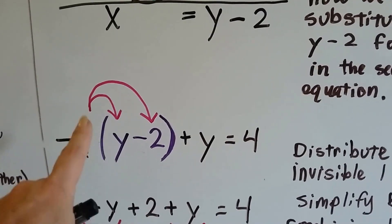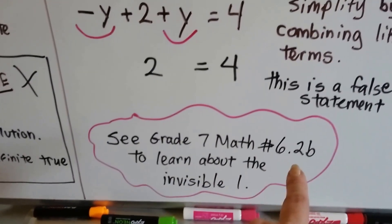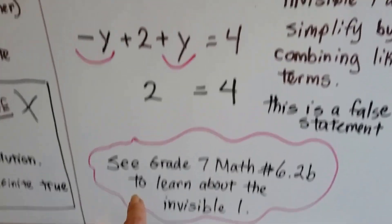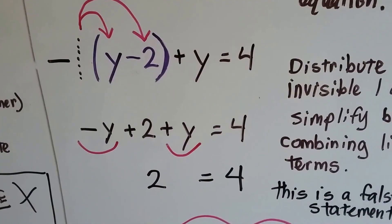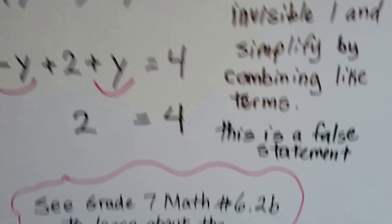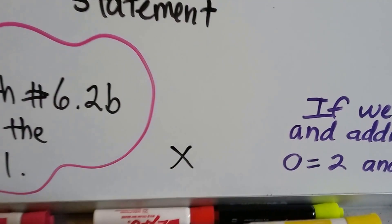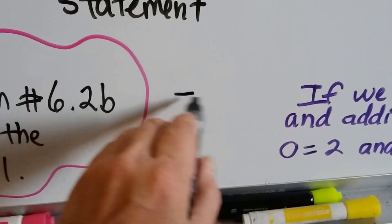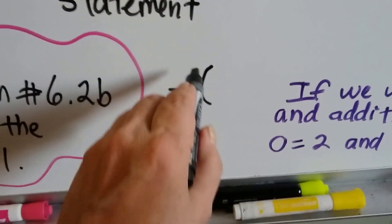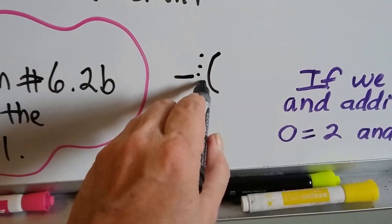So we have a negative 1. And if you've seen the video, grade 7 math, number 6.2b, and learned about the invisible 1, you understand why I put the 1 here. When you see a variable all by itself, there's actually an invisible 1 in front of it. And when you see a negative sign with parentheses, there's an invisible 1 here.